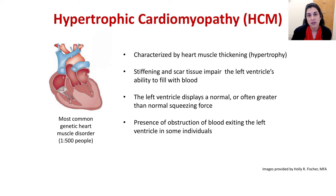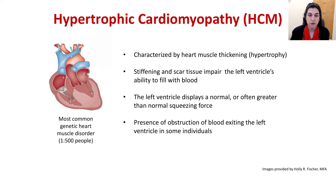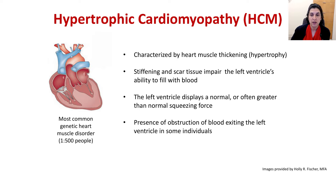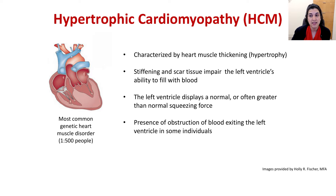Hypertrophic cardiomyopathy is characterized by heart muscle thickening or hypertrophy. That thickening results in stiffening and scar tissue formation that hinders the left ventricle's ability to relax or fill with blood. The left ventricle often displays a normal or greater-than-normal squeezing force, which can sometimes result in obstruction to blood flowing out. It is the most common genetic heart muscle disorder, occurring in about 1 in 500 people worldwide, with no discrimination based on ethnicity, race, or gender.